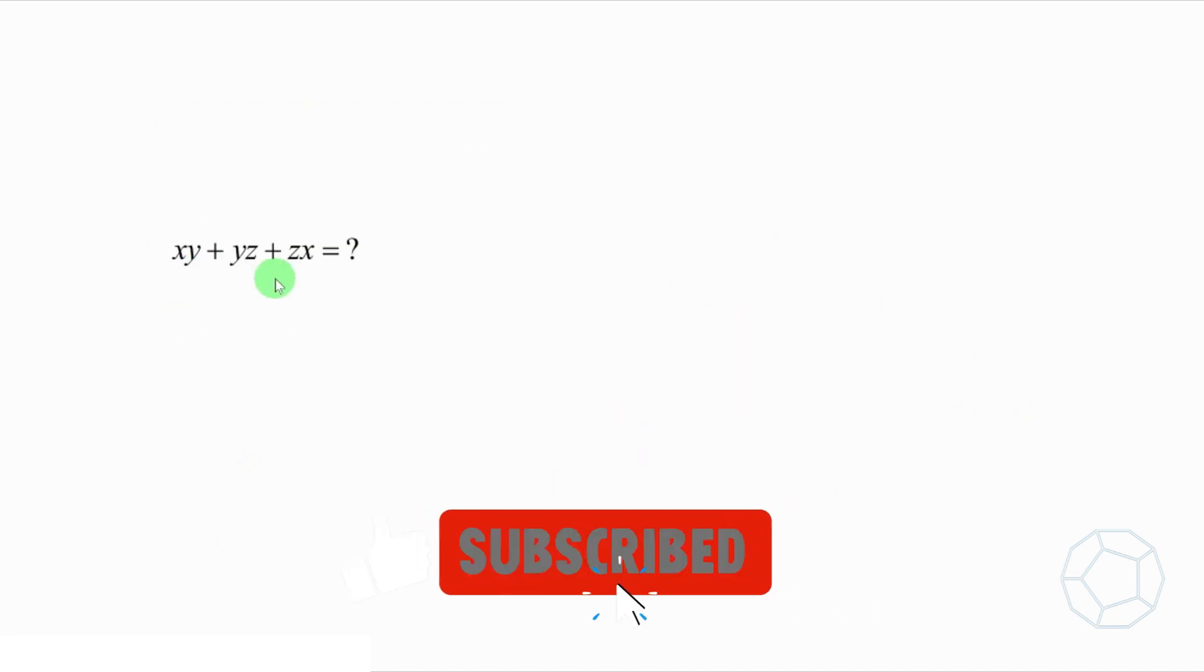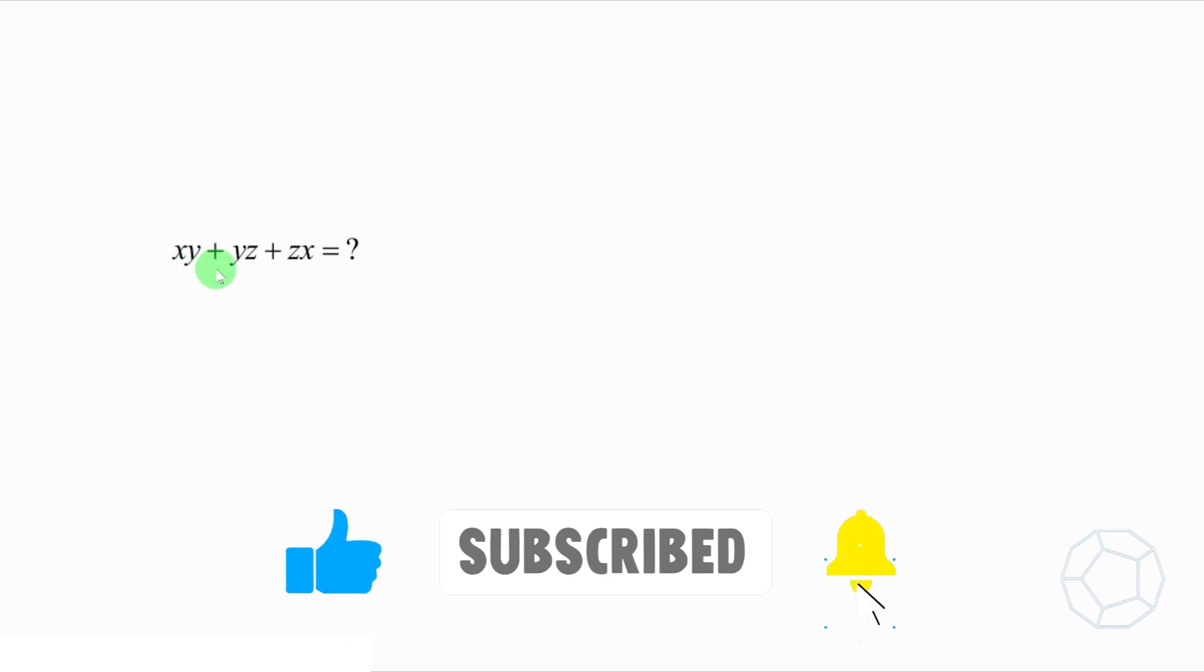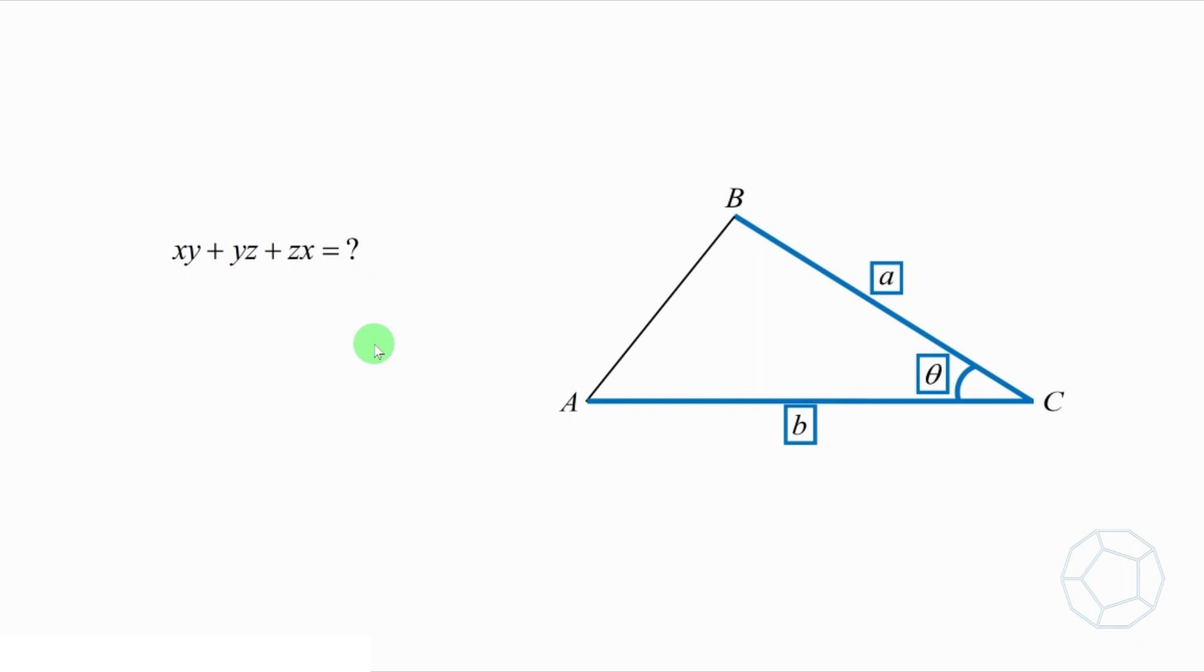Okay, go back to our original question. What is the value of xy plus yz plus zx? We have to look at another formula with these cross terms. Which one is good? Let's make use of this one. The area of triangle is equal to 1 over 2 A, B sine theta. There's a cross term A, B in the formula.